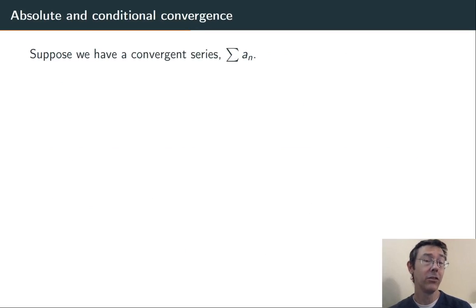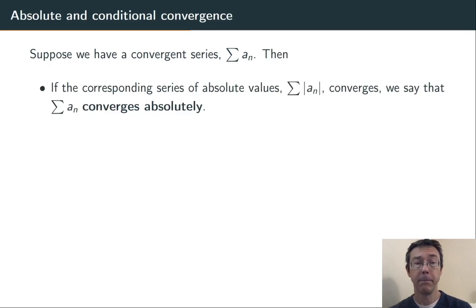This is called a conditionally convergent series. Let's get an official definition. We start with a convergent series, sum of a_n. There's two things that can happen. Either when we take the absolute values of all the a_n's, so now there are pluses between all the terms, the series converges. In that case, we say that the sum of a_n converges absolutely.